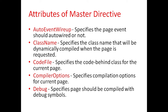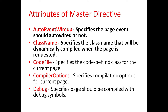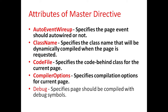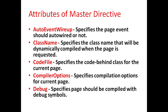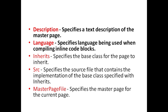Now we will see the attributes of master directives. AutoEventWireup specifies whether the page event should be auto-wired or not. ClassName specifies the class name that will be dynamically compiled when the page is requested. CodeFile specifies the code-behind class for the current page. Compiler specifies compilation options for the current page. Debug specifies whether the page should be compiled with debug symbols. Description specifies a text description of the master page. Language specifies the language being used when compiling inline code blocks.